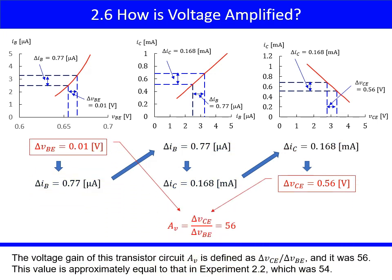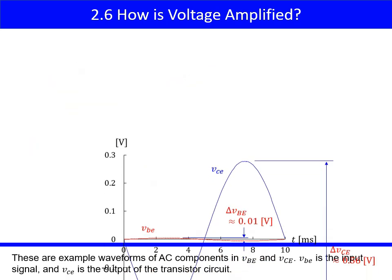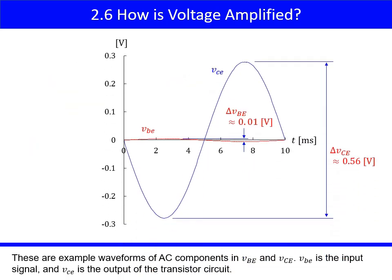The voltage gain of this transistor circuit A-V is defined as delta Vce over delta Vbe, and it was 56. This value is approximately equal to that in Experiment 2.2, which was 54. These are example waveforms of AC components in Vbe and Vce. Vbe is the input signal, and Vce is the output of the transistor circuit.